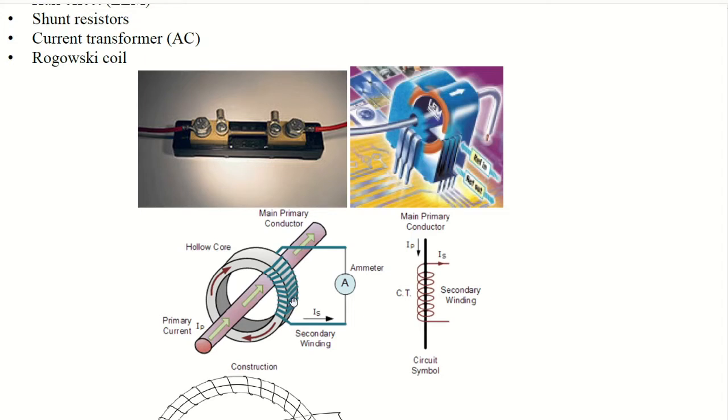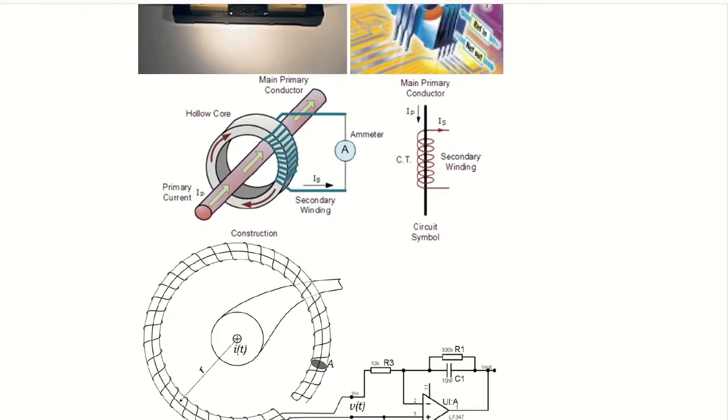So they work between 40 and 65 Hertz. So they cannot measure the DC current, for example. And you have Rogowski coils like this one, used for very huge current.